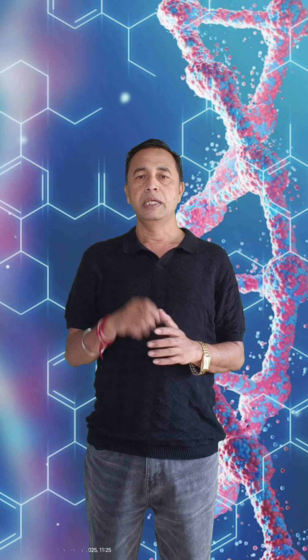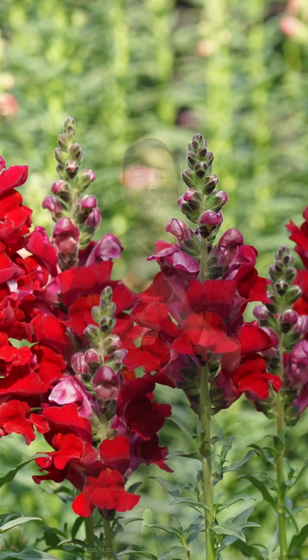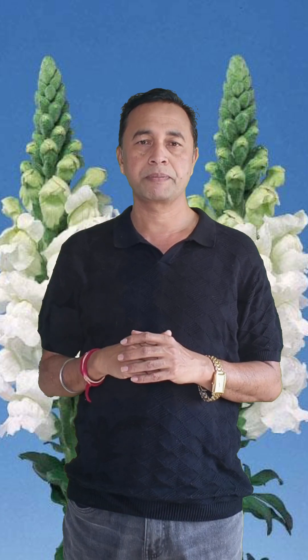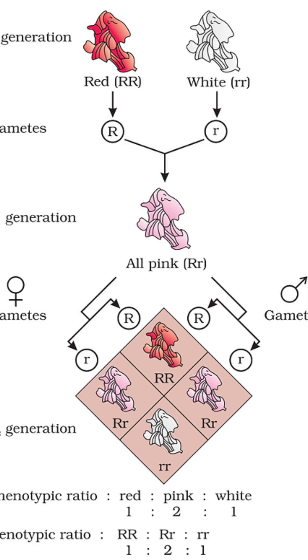For example, in the Snapdragon plant, there are two flower colors. The dominant flower color is red and the recessive is white — that is, red is capital R and recessive is small r. So when red flower (capital R, capital R) is crossed with the recessive white flower (small r, small r)...